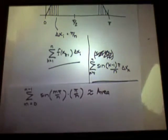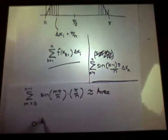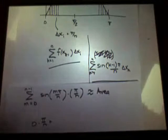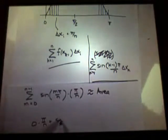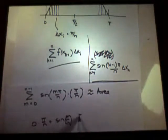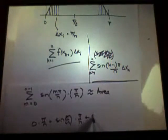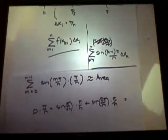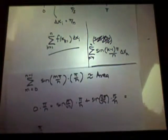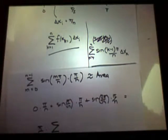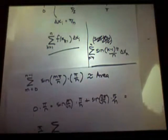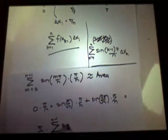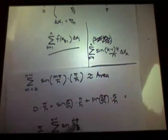So the area, that's a Cauchy sum for the area, right? I just re-indexed the sum. I can start at 0. So what is this sum? It's 0 times π over n plus sine π over n times π over n plus sine 2π over n times π over n, right? So it's π over n times the sum of sines.